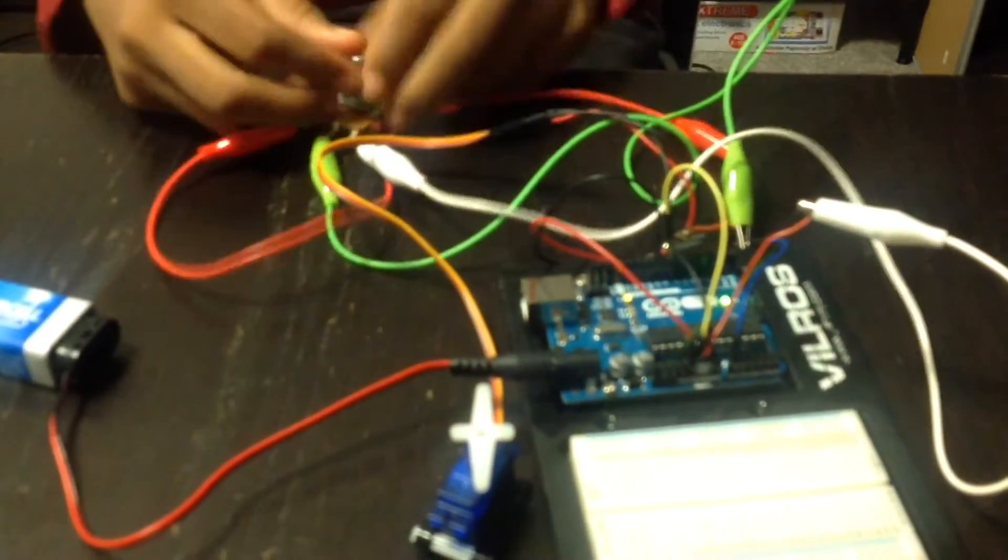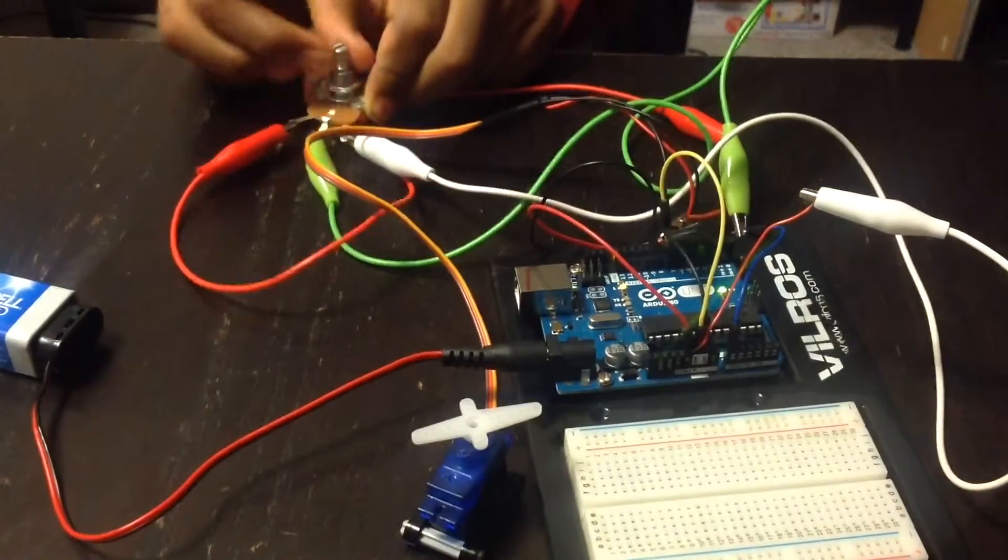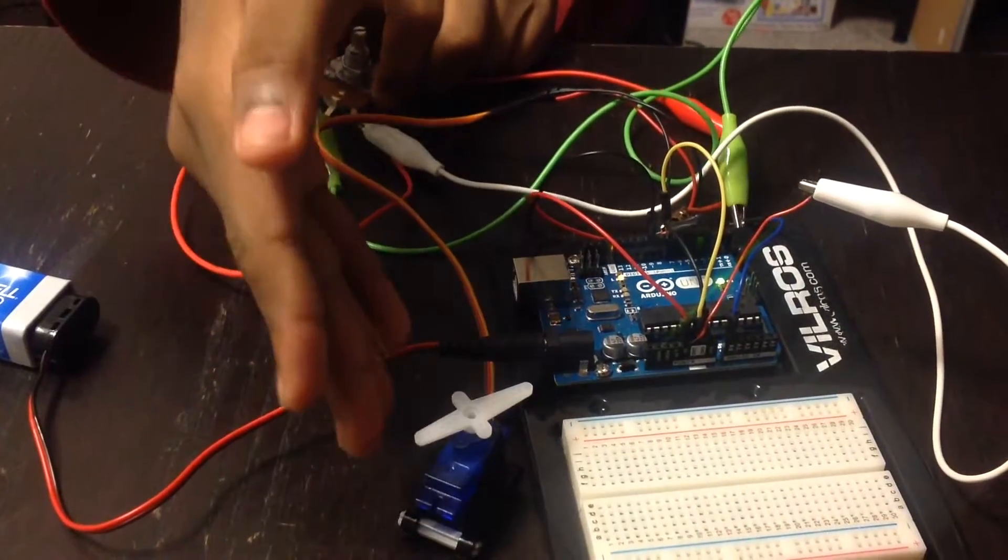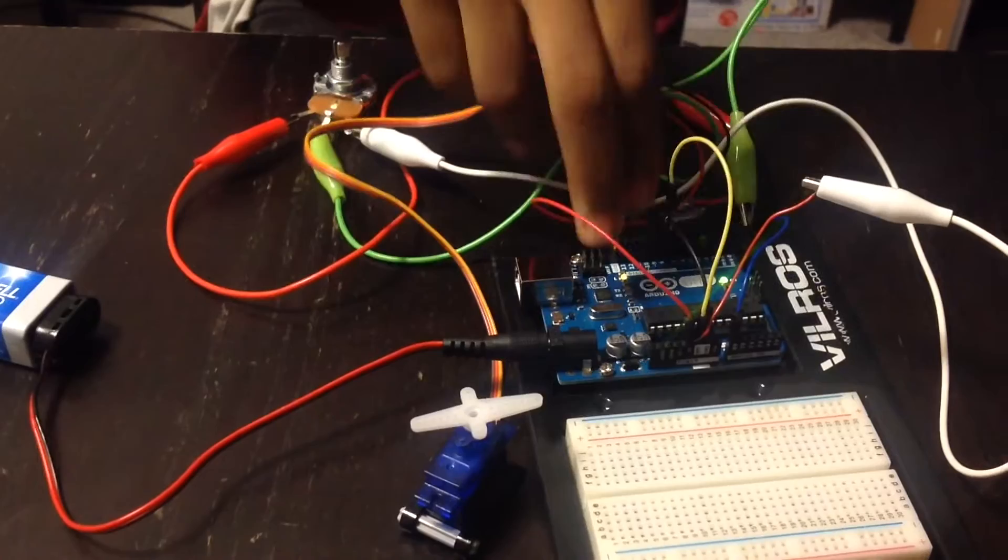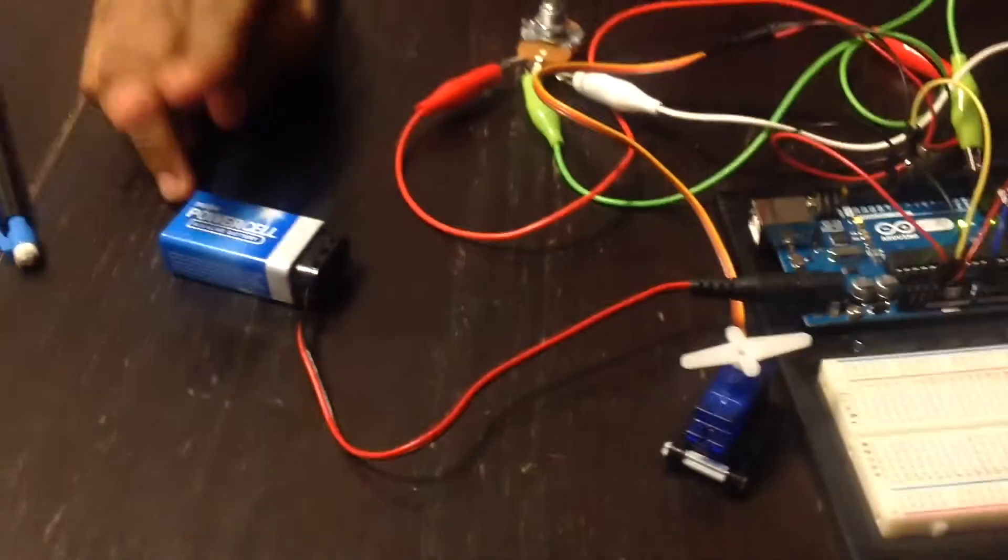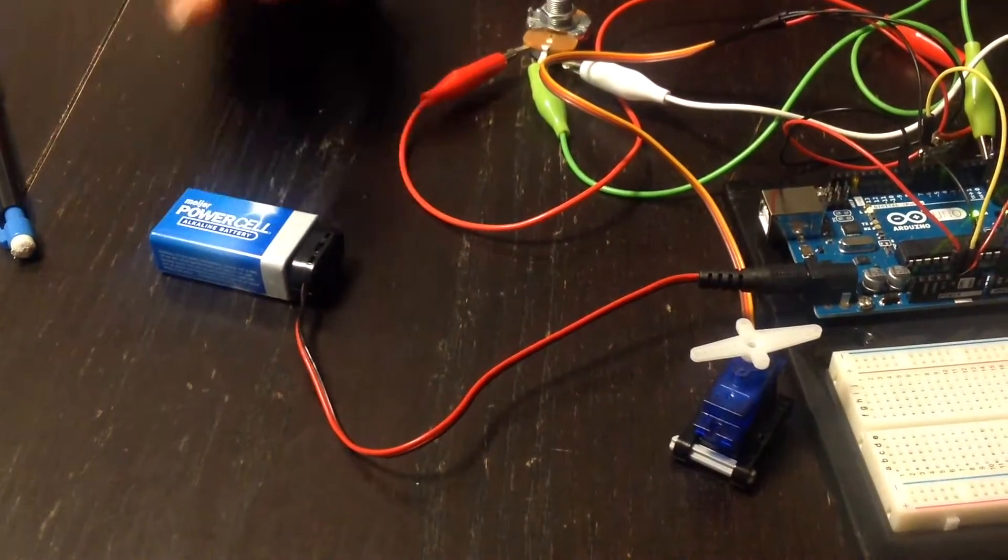Konnichiwa! Hey guys! Today I made a little project using a servo motor and a potentiometer knob. So we rotate this knob to rotate the servo motor and everything is plugged directly into the Arduino. And we're using a regular 9 volt battery.